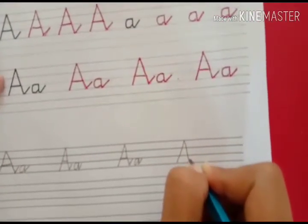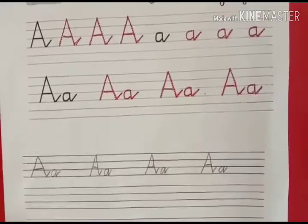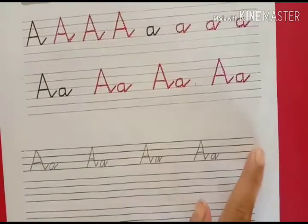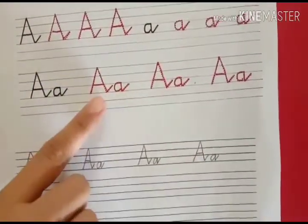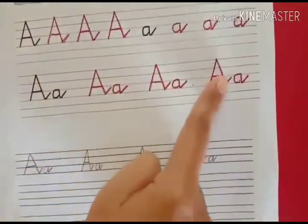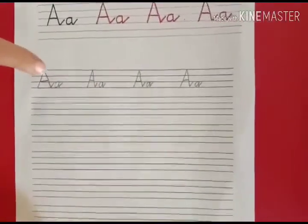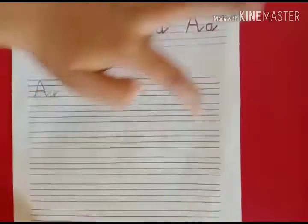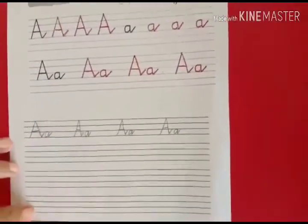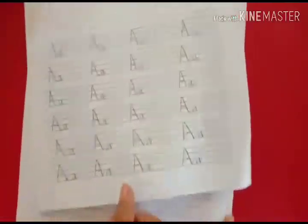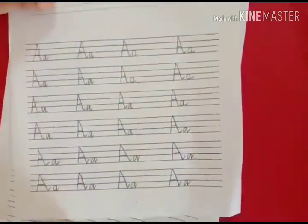Students, for one line you only make four letters — 1, 2, 3, 4 — based on the example above. So for the next line, you also only make four letter A's. Don't make too many and crowd them together, because it won't look neat. Miss Rate has already made a neat example: we only make 1, 2, 3, 4 going downward.